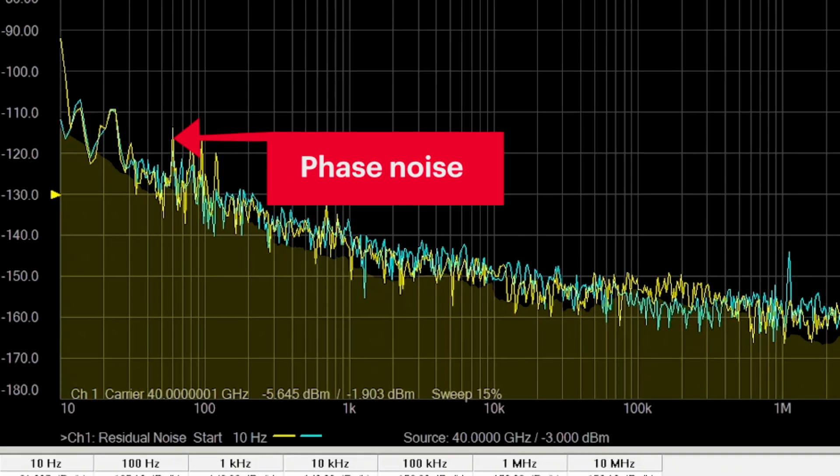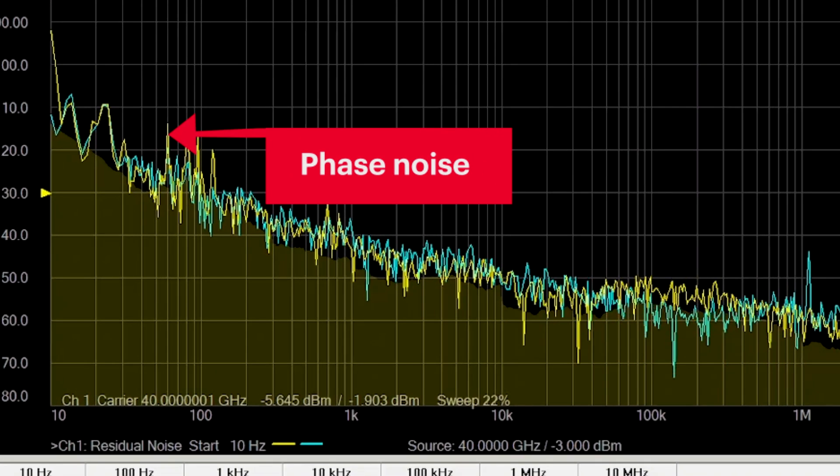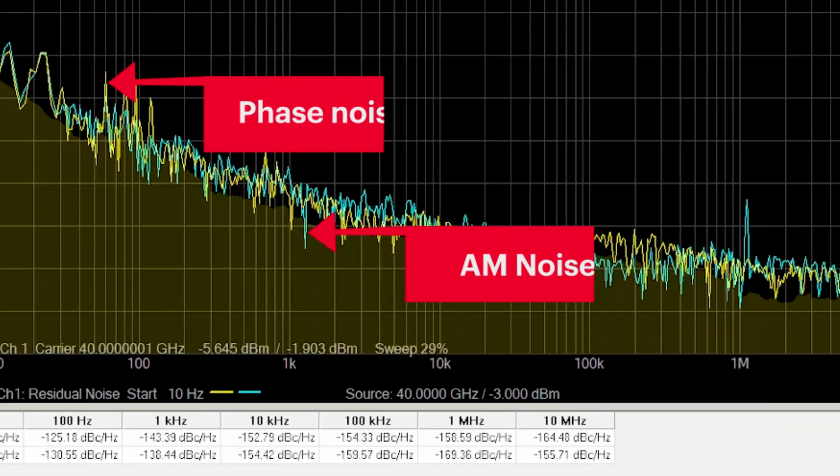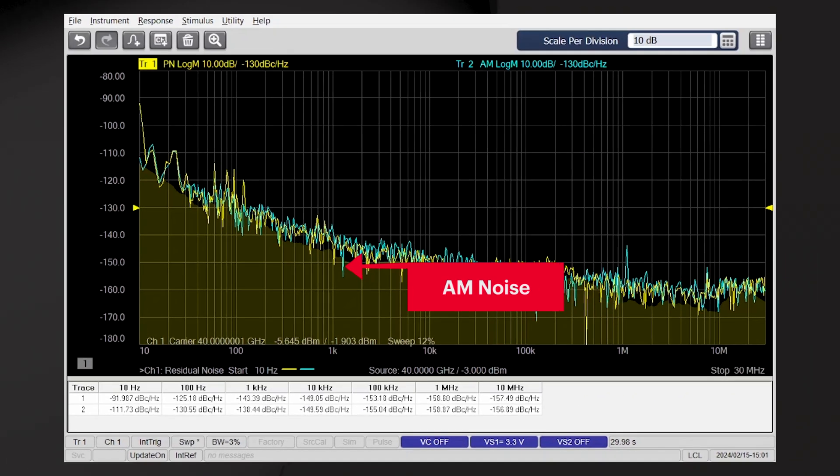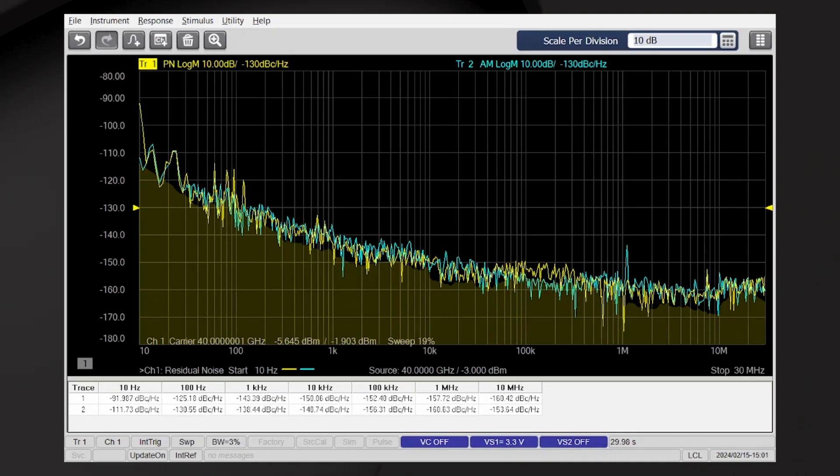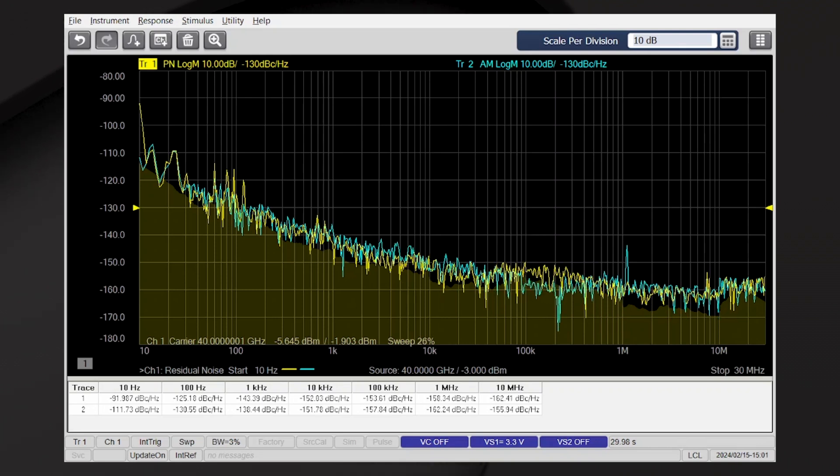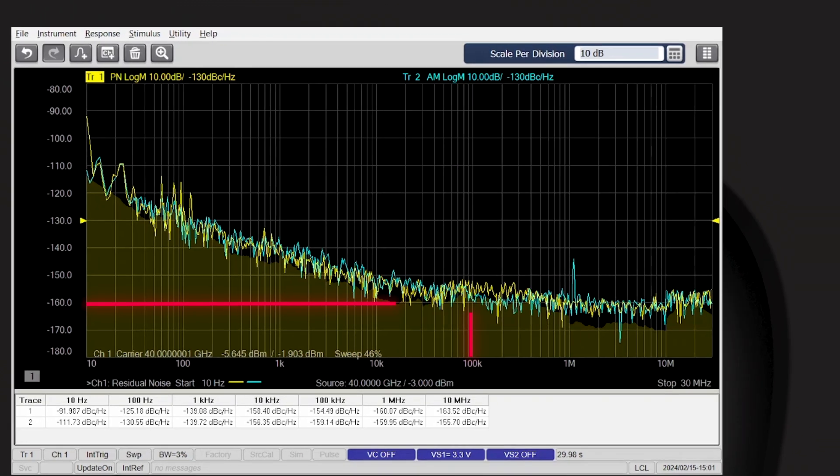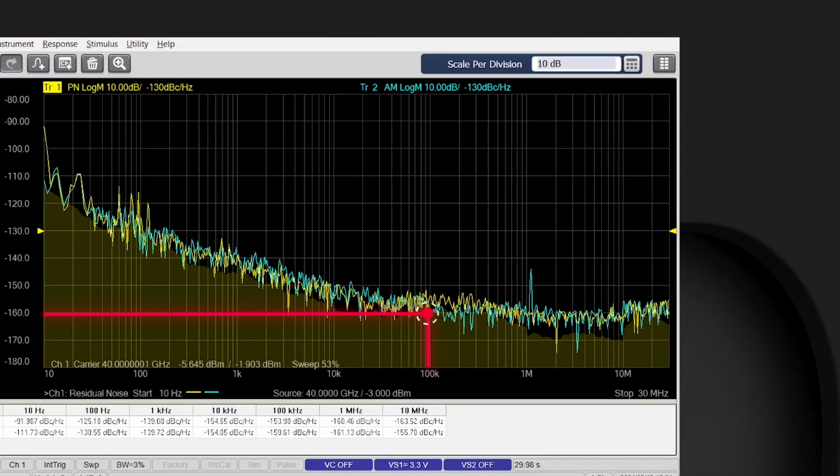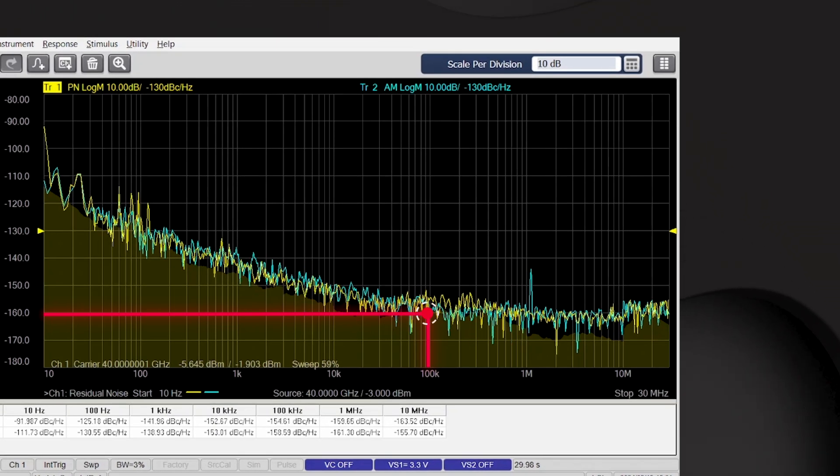The yellow trace is the very low phase noise of the 40 gigahertz LNA. The blue trace is the AM noise. The input is minus 6 dBm and the gain is about 8 dB, and we can verify this by looking at the difference between the power of RF1 and RF2. The residual phase noise of this device is about minus 160 dBc per hertz at a 100 kilohertz offset.